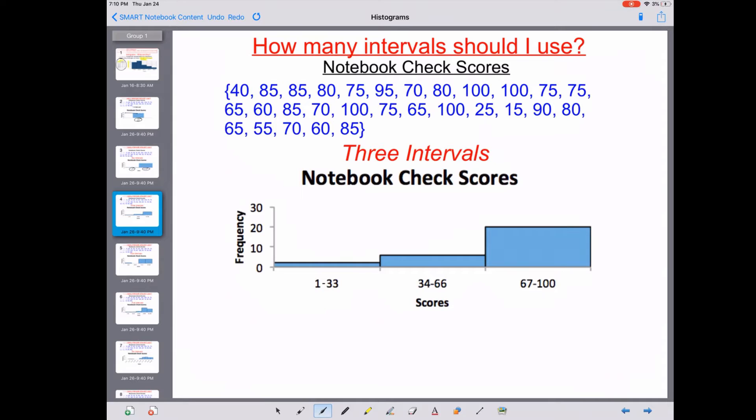Here's another histogram, same histogram from our data here. Our data is coming from a bunch of notebook check scores that we did in class. This is three intervals. Again, we get a little more detail here, but this is really not enough still.